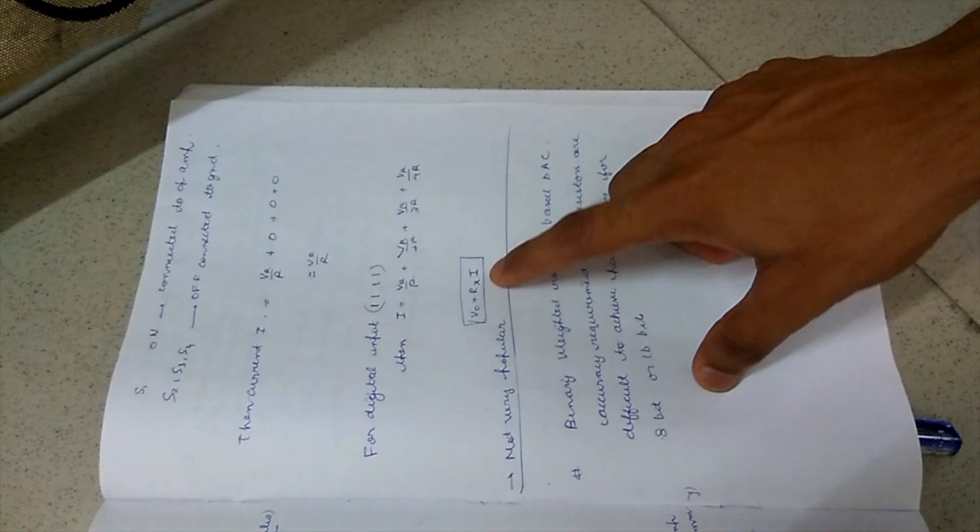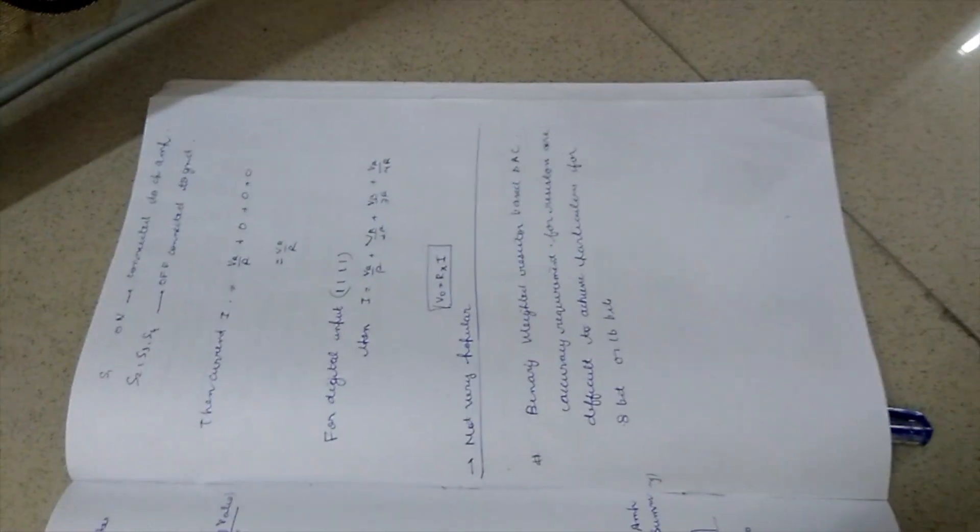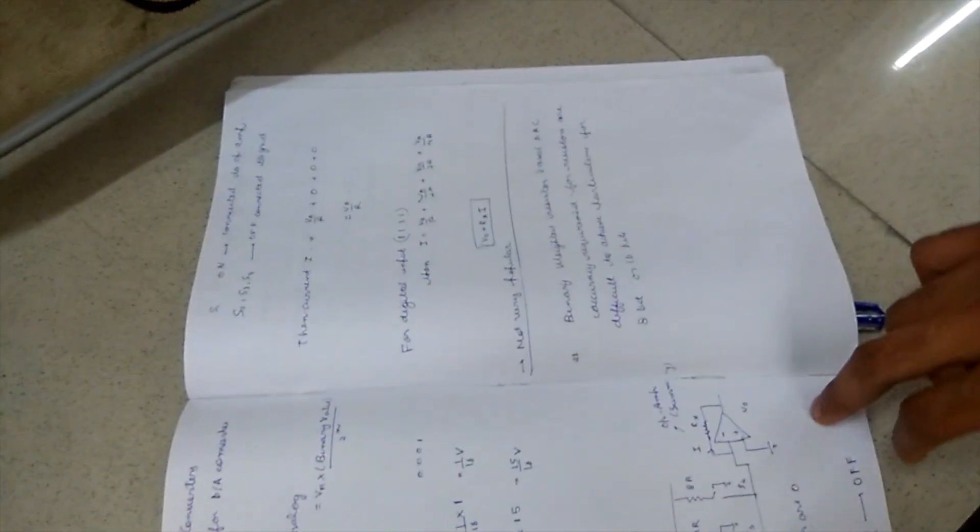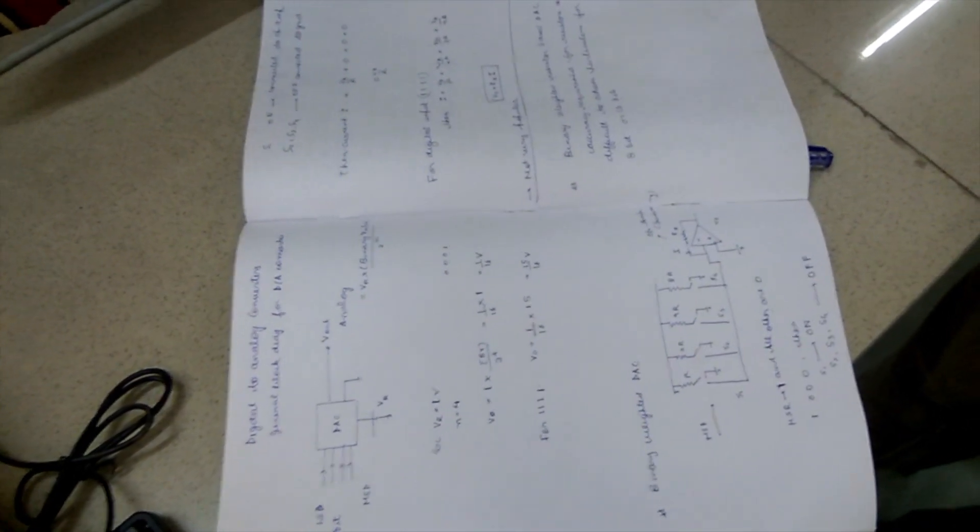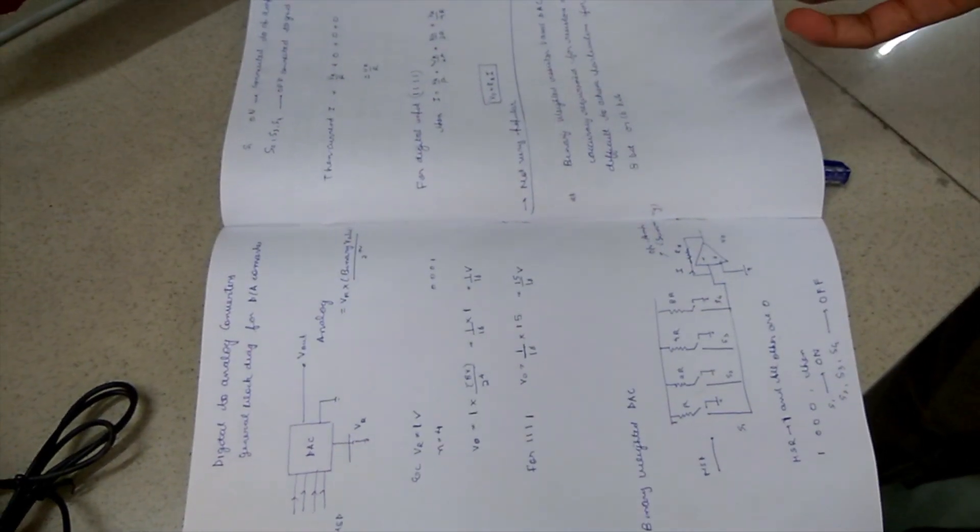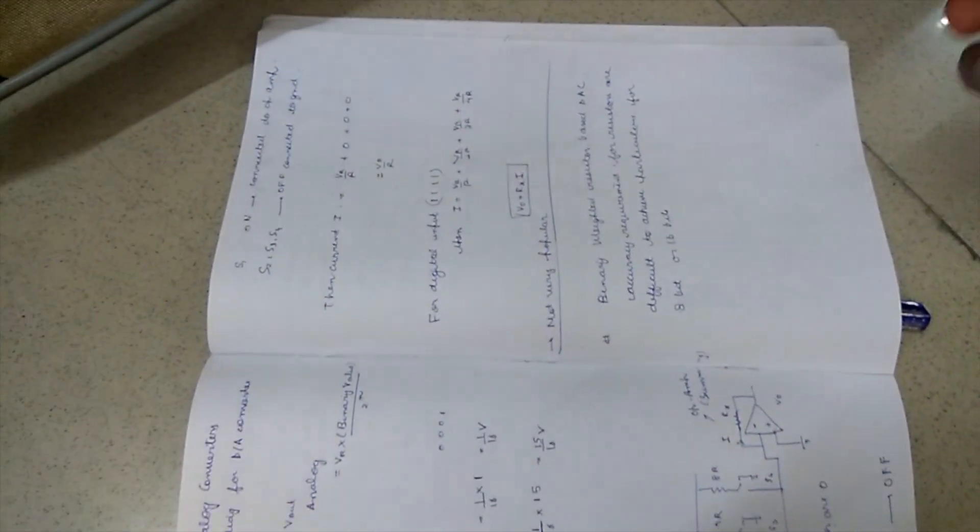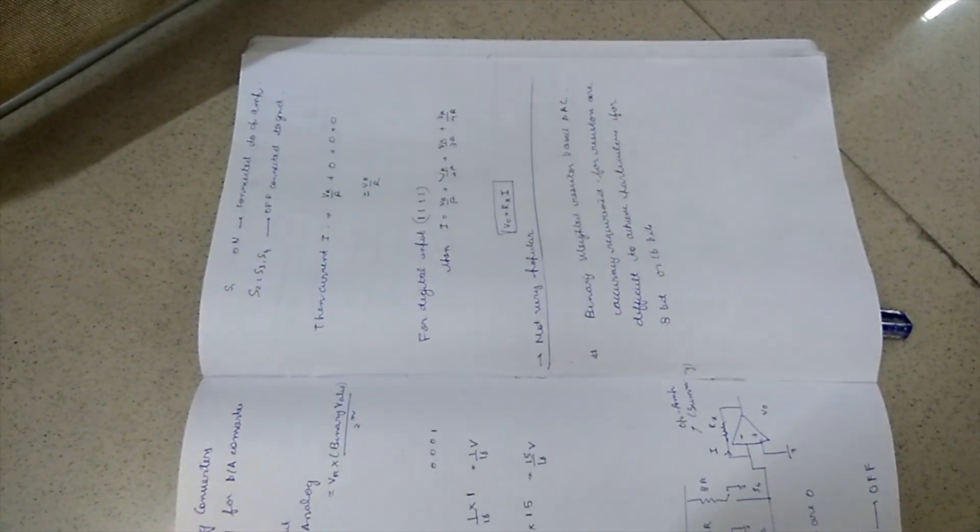The output resistance is given by Rx into I. The drawback of this binary weighted technique is that we need a precision of 1 divided by 2 raised to power the number of bits. In this case, it is a 4-bit digital-to-analog converter.